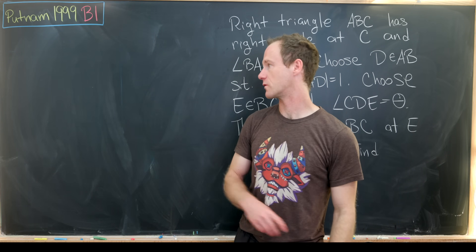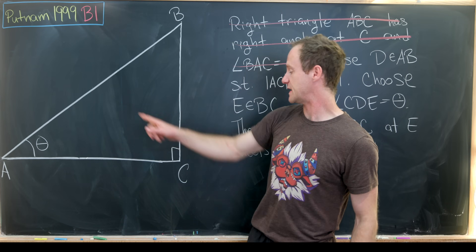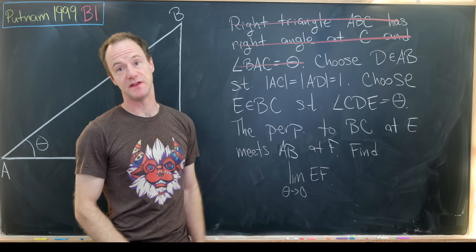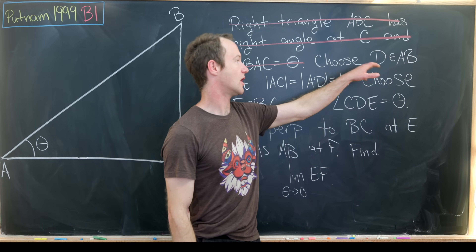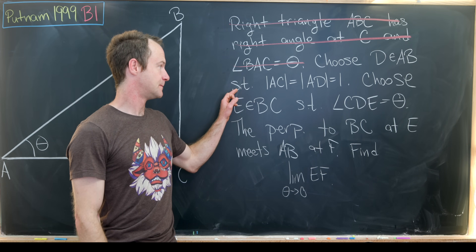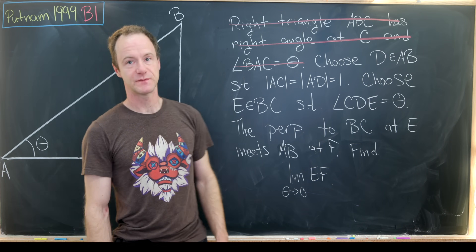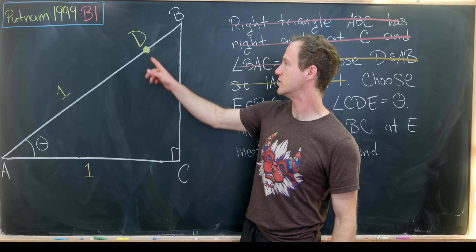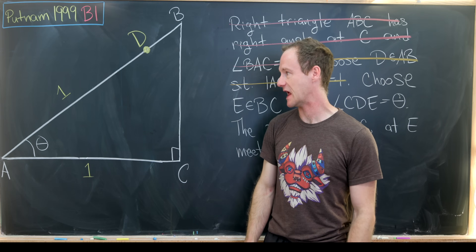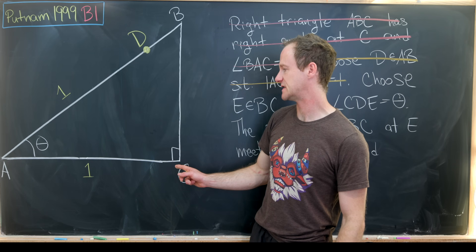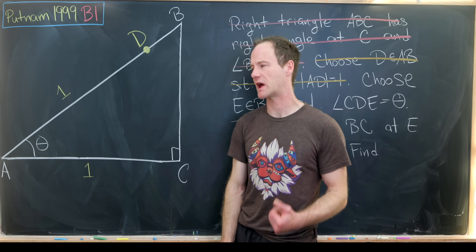Let's get that picture on the board. There's our right triangle ABC with a right angle at C, and angle BAC is theta. Now let's look at the next sentence: we'd like to choose D on line segment AB such that the length of AC equals the length of AD, which equals one. So we put D appropriately on AB, making line segment AD congruent to line segment AC. Notice this is like AC and AD both being radii of a unit circle centered at A.